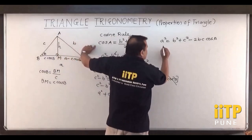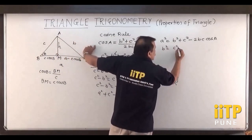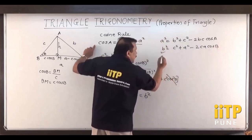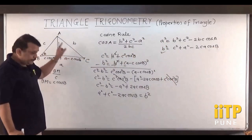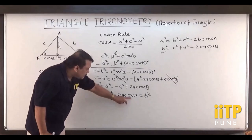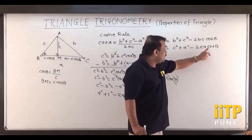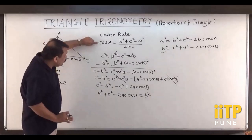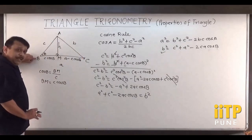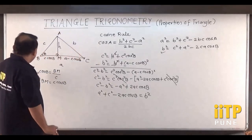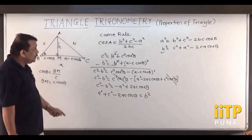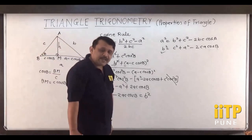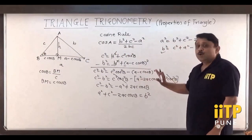Expanding: c² − b² = c² cos² B − (a² − 2ac cos B + c² cos² B). The c² cos² B terms cancel, leaving c² − b² = −a² + 2ac cos B. Rearranging: b² = a² + c² − 2ac cos B, which is exactly the cosine rule result. Choosing the vertex labels appropriately, a² = b² + c² − 2bc cos A is similarly proved.